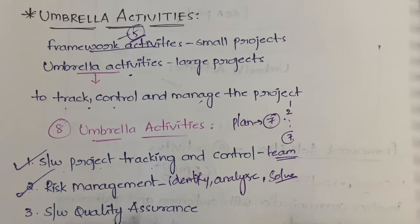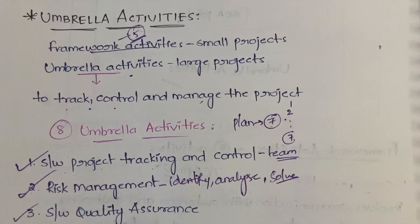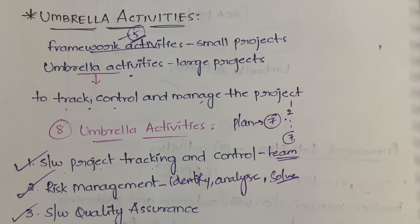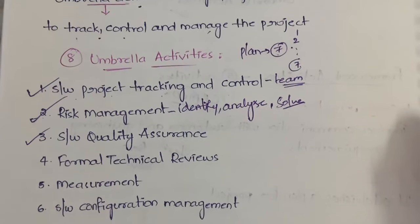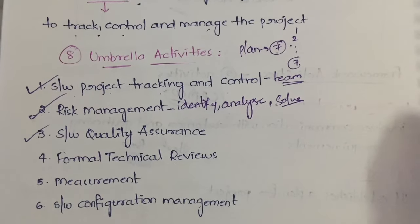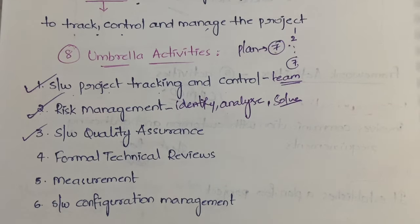Software quality assurance involves testing the quality of the software. It will be covered in detail in the first chapter, but for now: it tests the quality of the software by doing activities like reviews and so on.